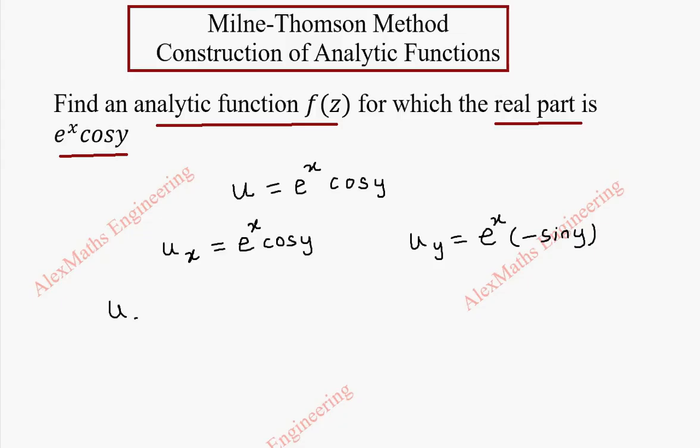Now we are going to find u_x(z, 0). Wherever x is there, we have to substitute z, and wherever y is there, we have to substitute 0. So this becomes e^z cos 0. Cos 0 is 1, so this is only e^z.